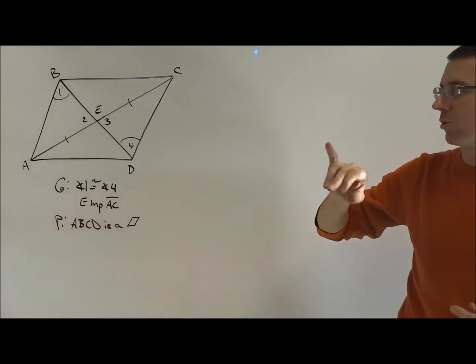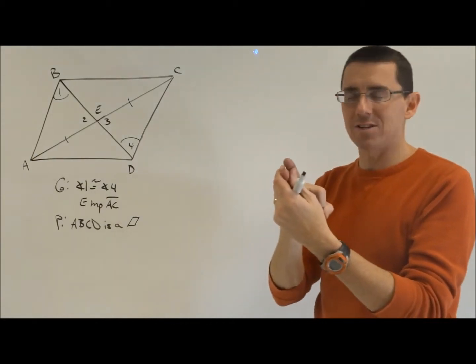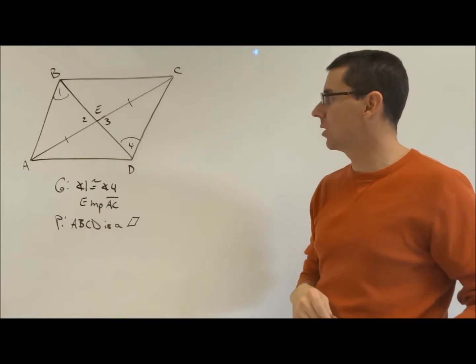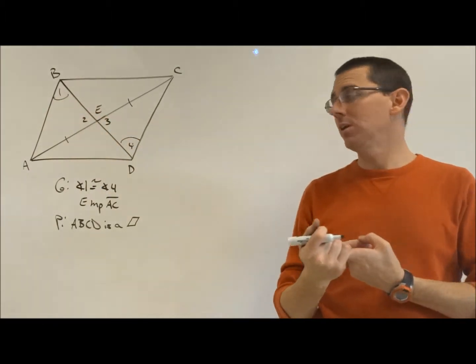Five ways to prove triangles congruent. SSS, SAS, ASA, AAS, and then the fifth way only worked in right triangles, which was hypotenuse leg. So I already have an angle and a side, so it's like, alright, is it going to be side angle side?